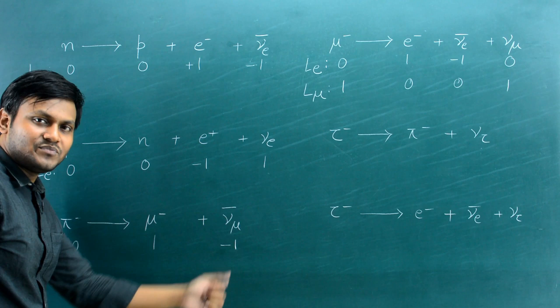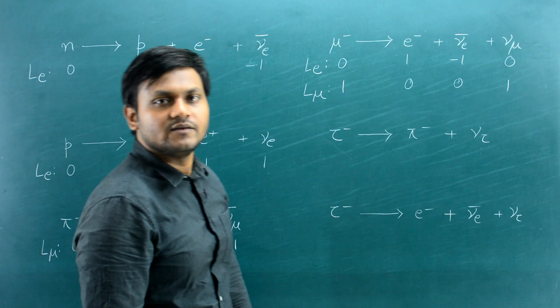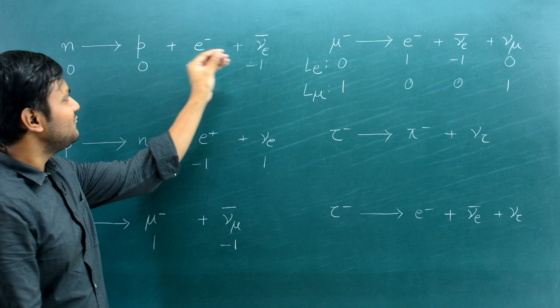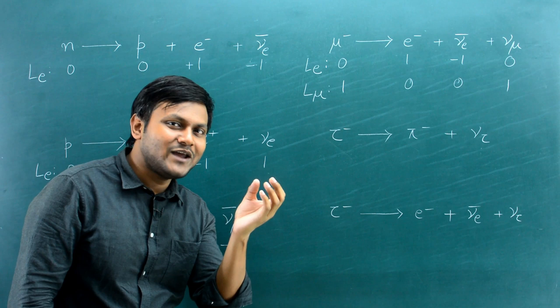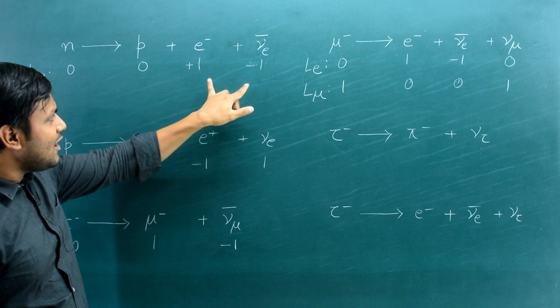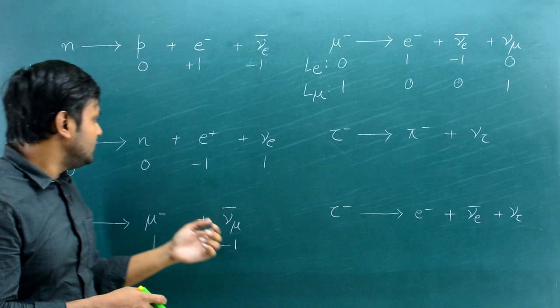Similarly, whenever a muon decays, a muon neutrino is produced on the other side because the quantum number remains conserved. Along with the electron, an electron anti-neutrino is always emitted. Along with the muon, a muon anti-neutrino is always emitted. Along with the positron, an electron neutrino is emitted.